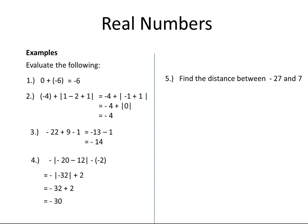Find the distance between minus 27 and 7. To do this, we need to take the difference between these two numbers. You might ask: do I take the first number subtract the second, or the second subtract the first? The good news is both ways will work. But we need to remember that distance is always positive, so we have to apply the absolute notation.